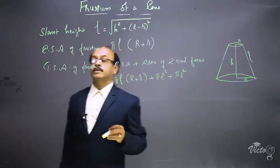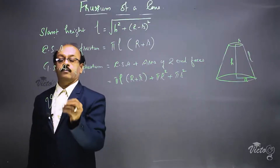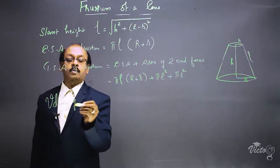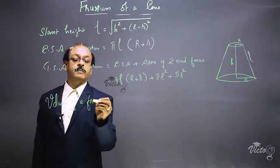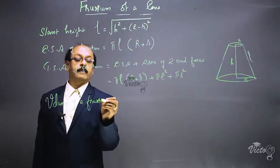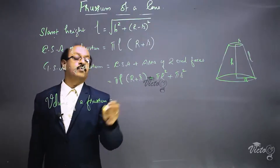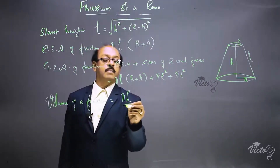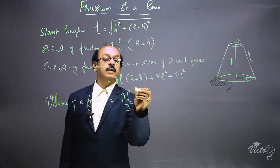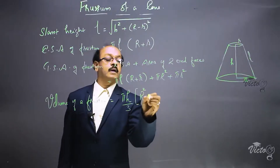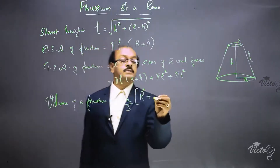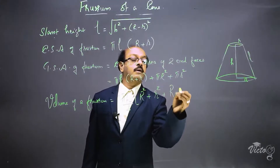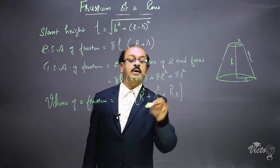The volume of a frustum is given by the formula: Volume = (π·h/3) × (R² + r² + R·r), where h is the height, R is the radius of the larger end, and r is the radius of the smaller end.